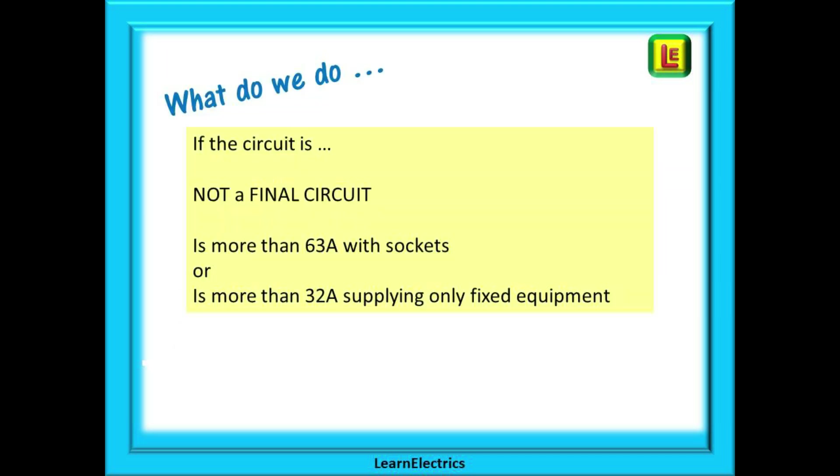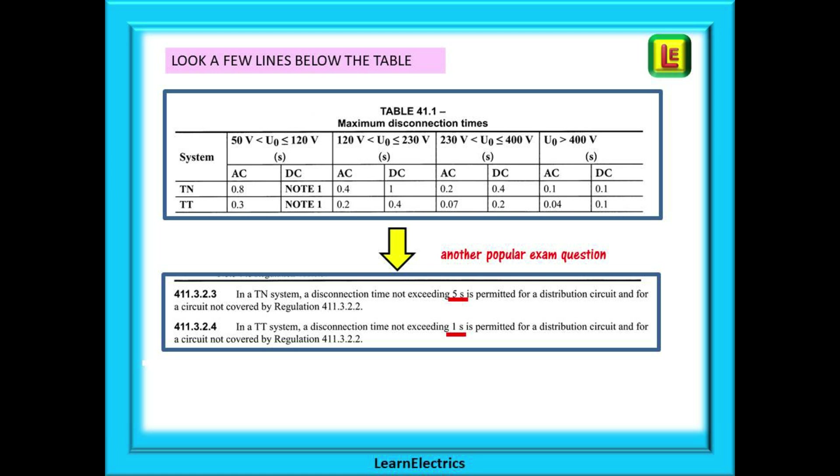But what do we do if the circuit is not a final circuit, or it is more than 63 amps, or more than 32 amps supplying only fixed equipment? Look at just a few lines below Table 41.1. Here you will find regulations 411.3.2.3 and 411.3.2.4. They tell us the maximum disconnection times for distribution circuits or those circuits that don't meet the criteria for Table 41.1.